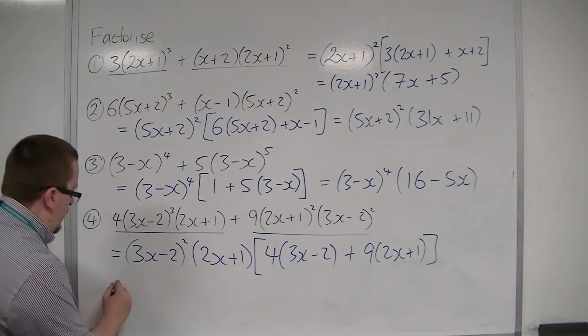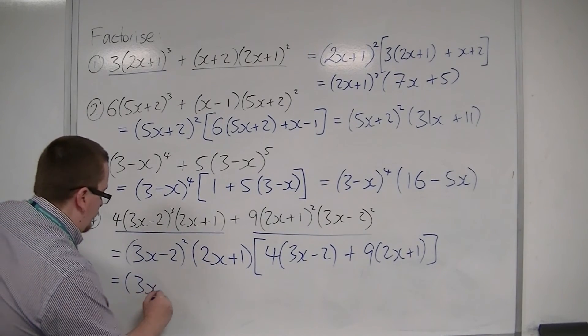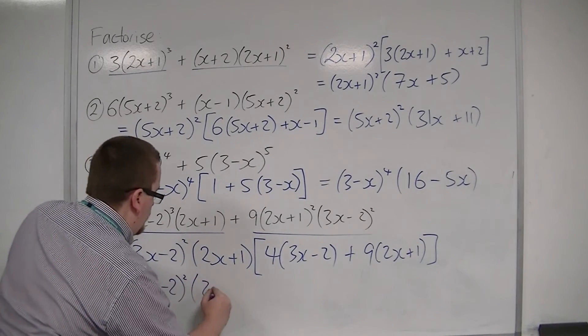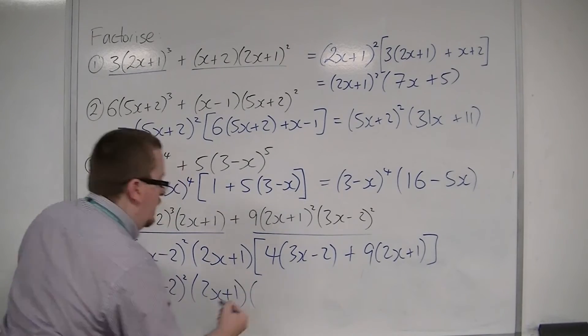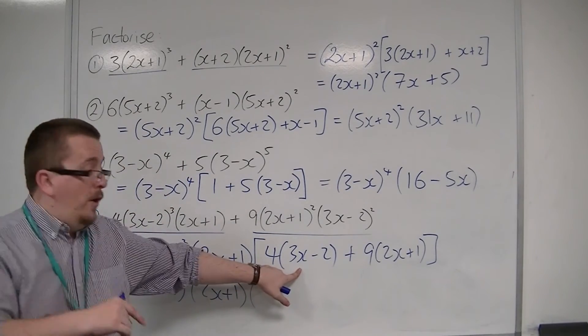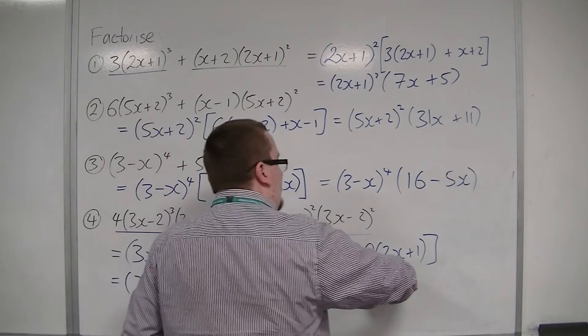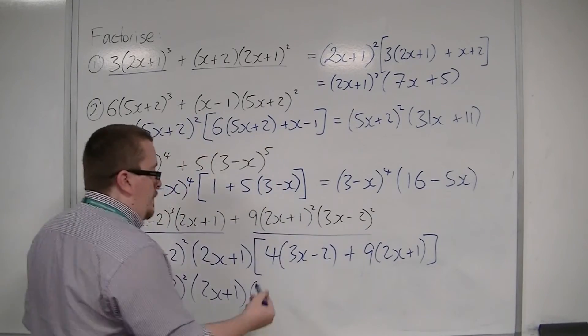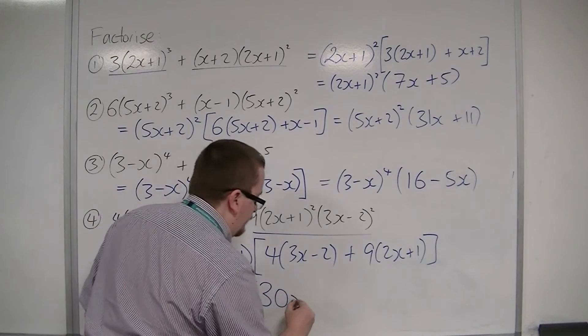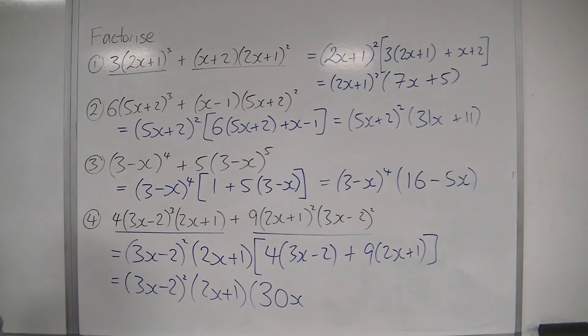I just need to simplify this. Those two brackets can remain the same. And finally, I've got 4 lots of 3x, so 12x, plus 18x. So, that will make 30x. So, 12x plus 18x.